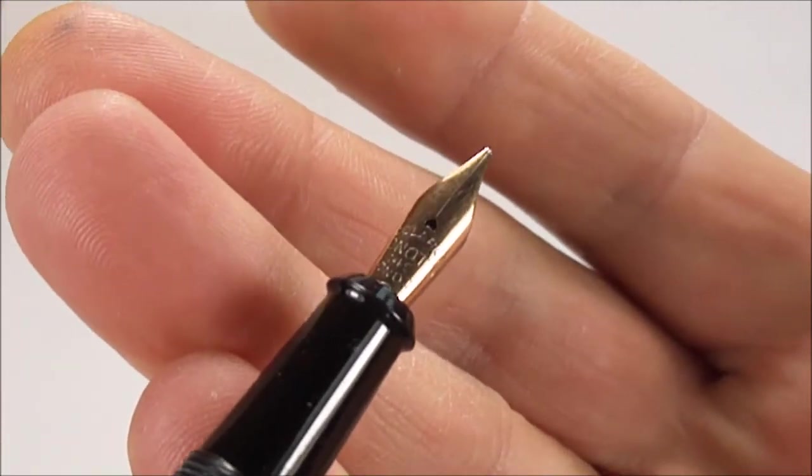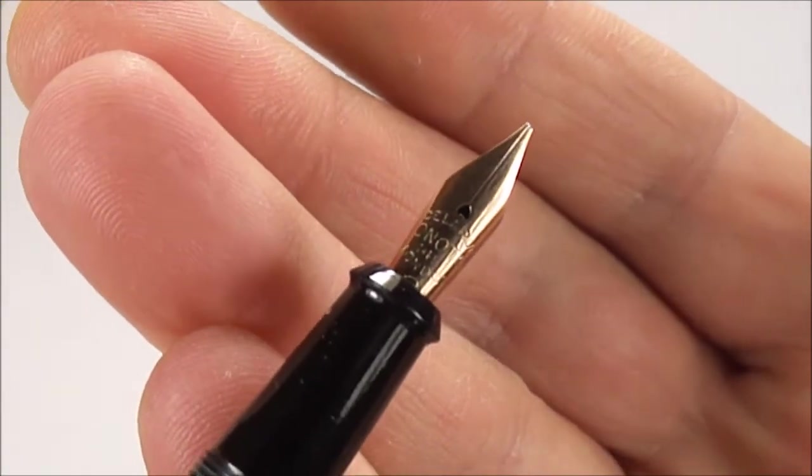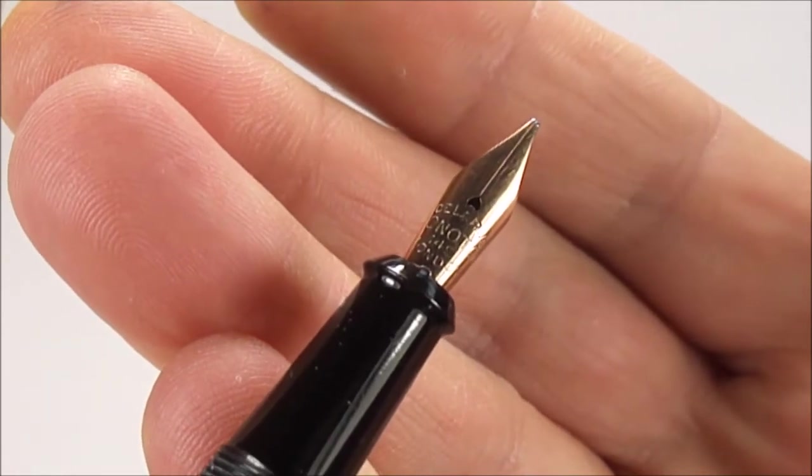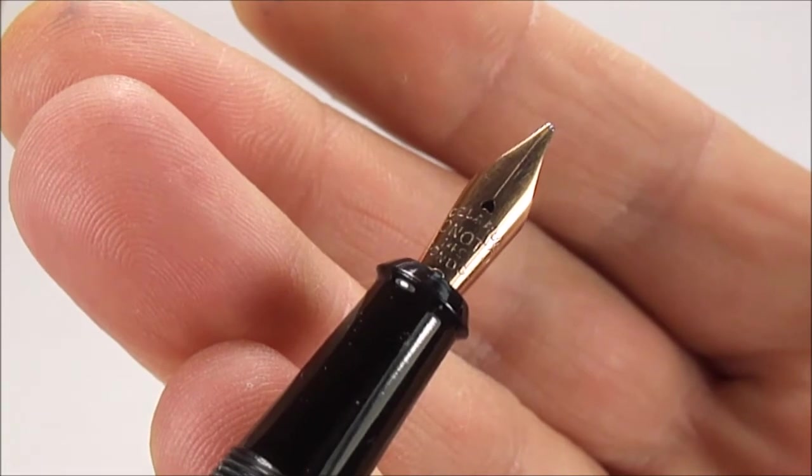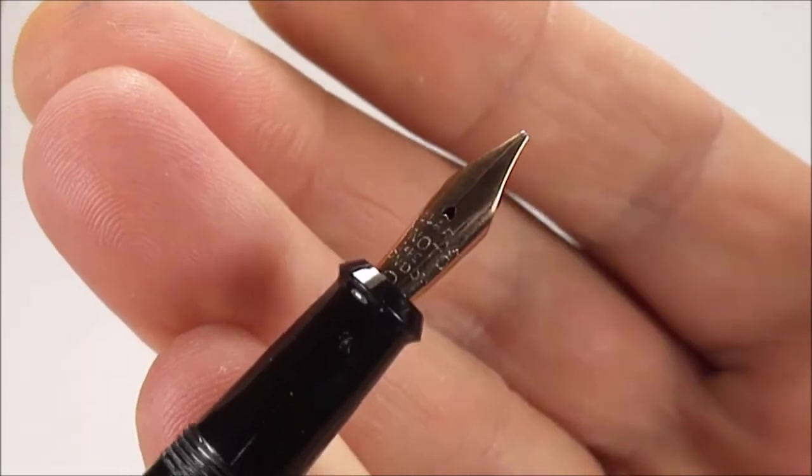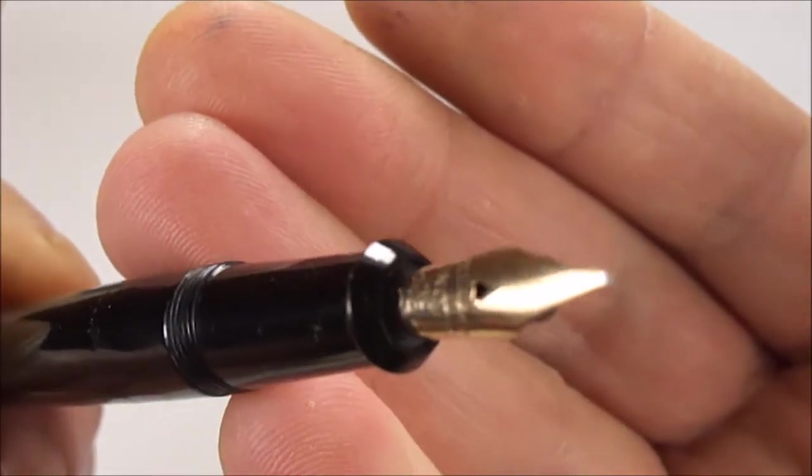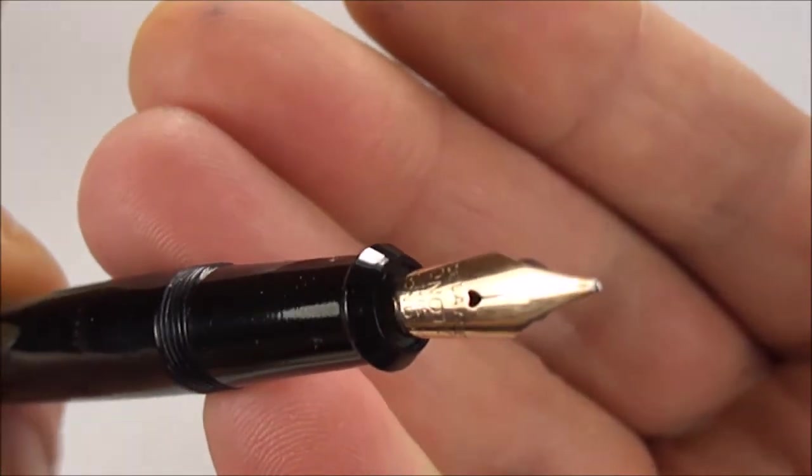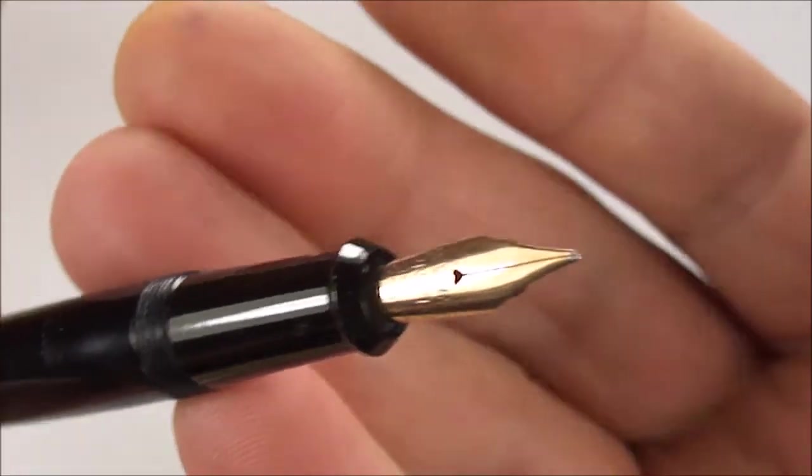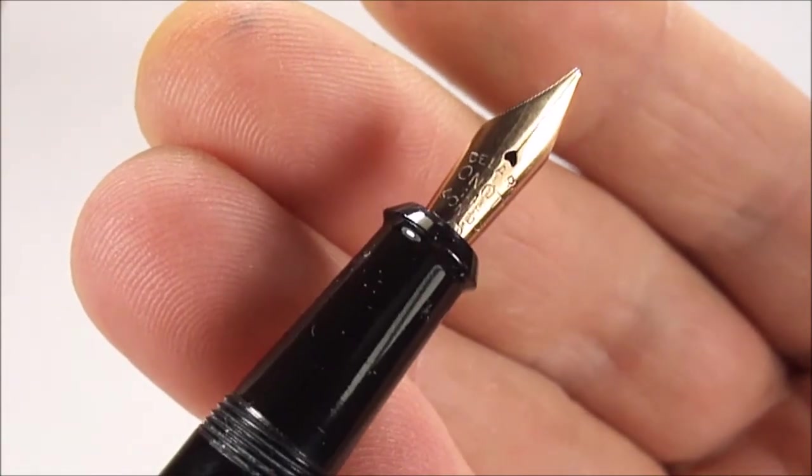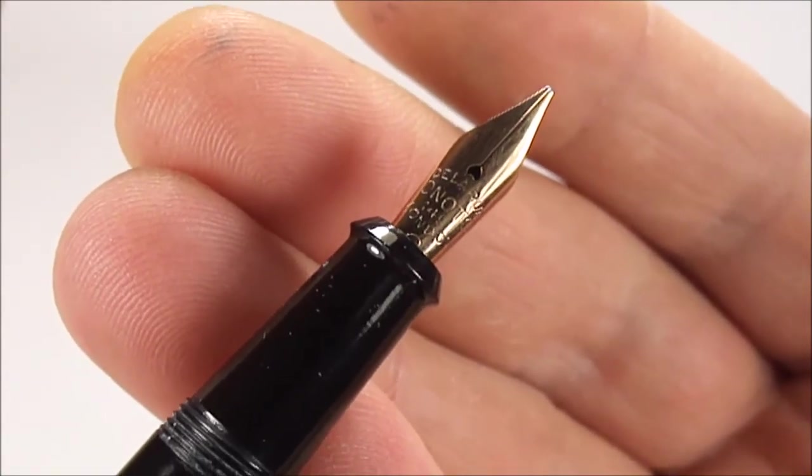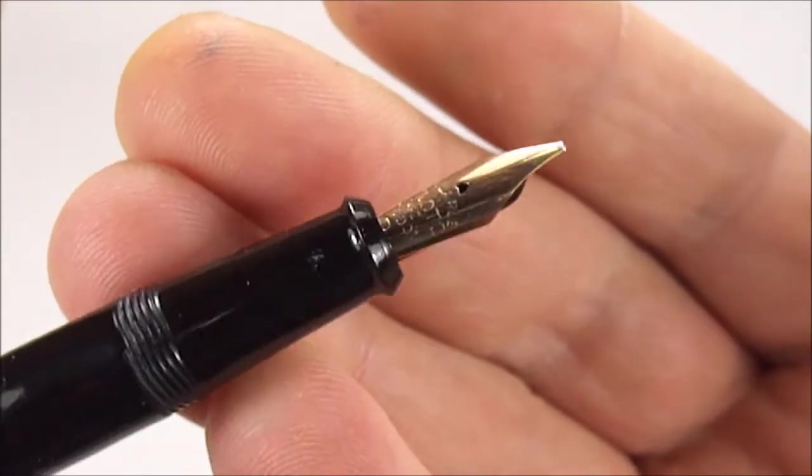And if we show you the nib, let's give it nice and close and keep it clear. And I'm hoping you'll be able to read. It says De La Rue, Onoto, 14 carat, London. And then just sort of slightly hiding towards inside the section, it has the number two. So this is a number two nib.